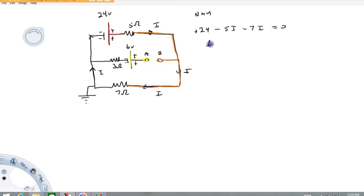I'm going to solve this for the current. I is going to be 24 volts over 12 ohms. It's going to work out to be 2 amps. So we've got a 2 amp current in this problem.